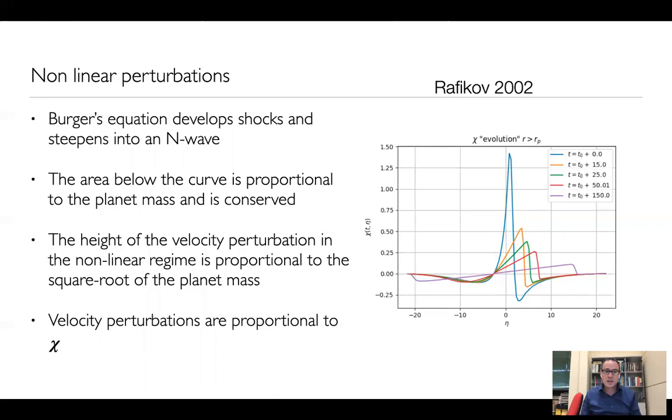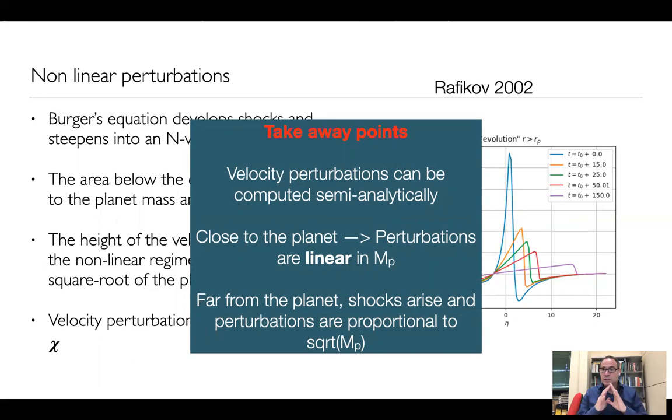So to summarize, we have calculated the velocity perturbation in a semi-analytic way following Rafikov and Goodman, and important things to remember is that close to the planet, such velocity perturbations are linear with planet mass, while far from the planet, shocks arise and the perturbation turns out to be proportional to the square root of the planet mass.